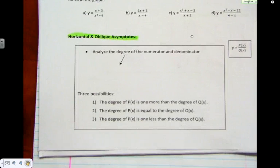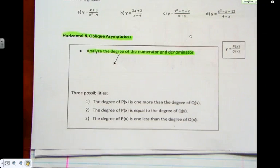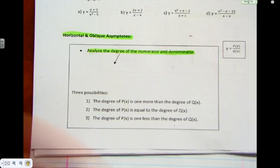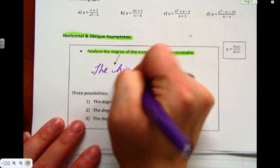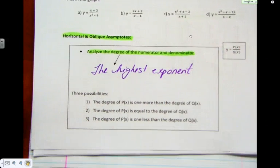Let's go to horizontal and oblique — which is new. Because last year we didn't really talk about horizontal. Step number one: we have to analyze the degree of the numerator and the denominator. Way back in grade 9 we taught you the degree of a polynomial — it's the highest exponent.